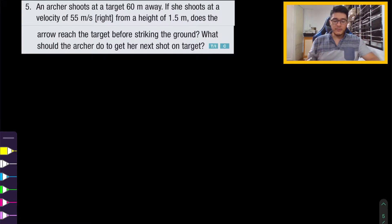For question number five, we have an archer shoots at a target 60 meters away. If she shoots at a velocity of 55 meters per second to the right from a height of 1.5 meters, does the arrow reach the target before striking the ground? And what should the archer do to get her next shot on target?